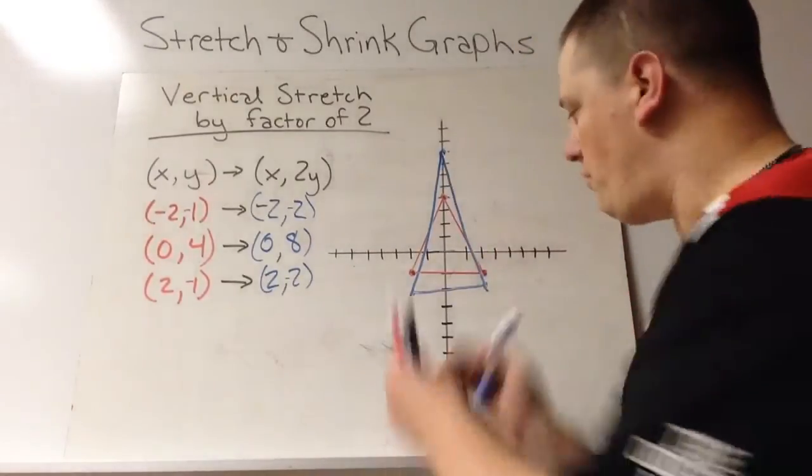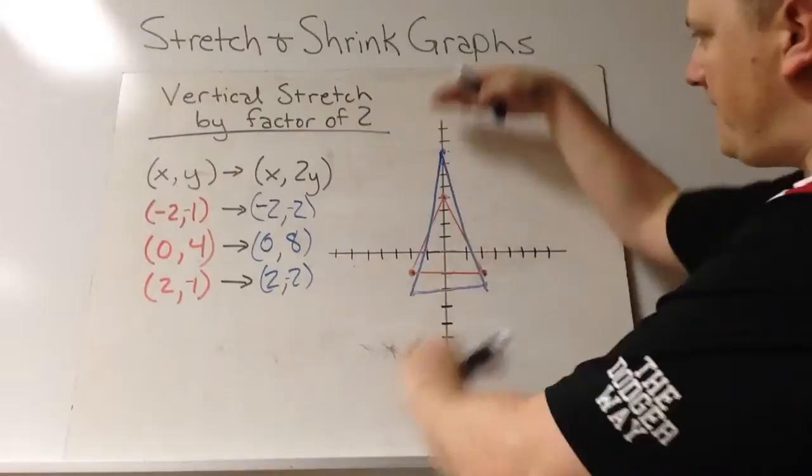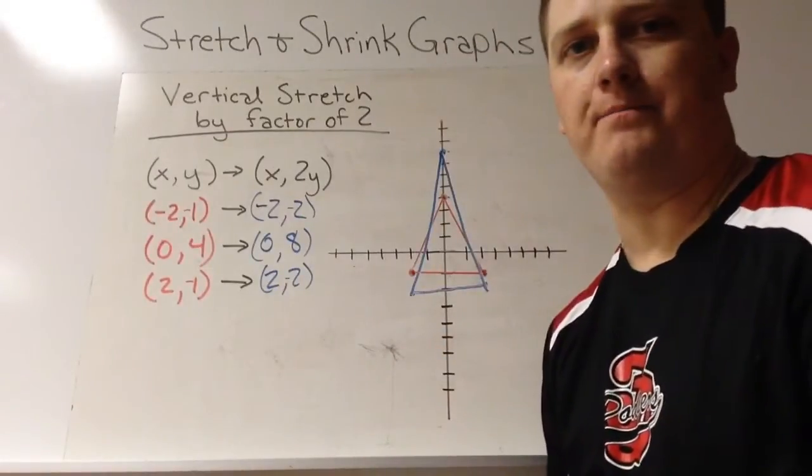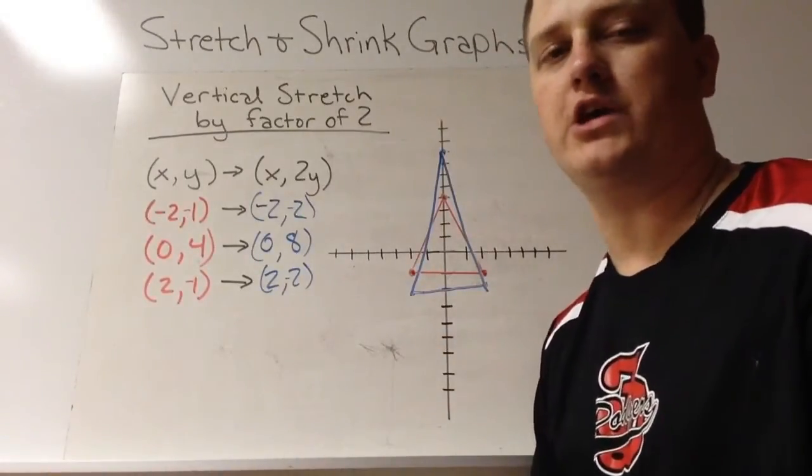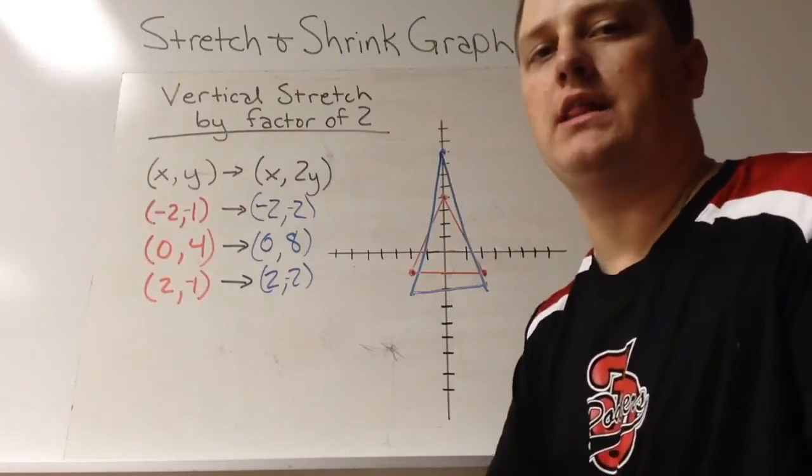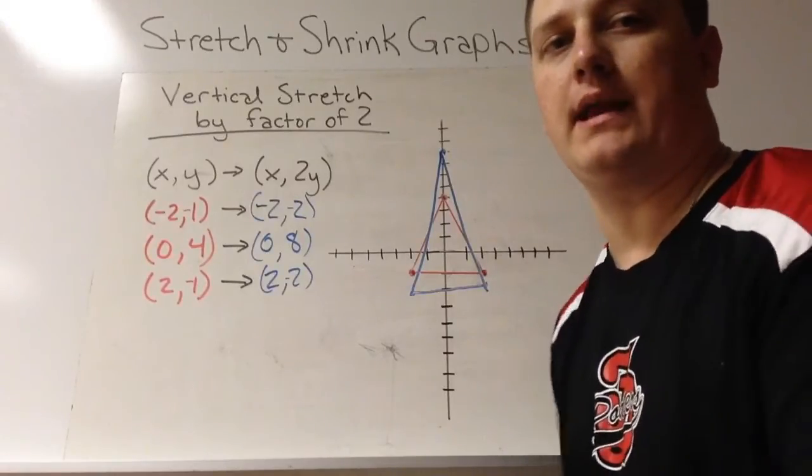Notice the width stays the same, but the height has been made bigger. So it's a much taller triangle now. We're going to look at this for a vertical shrink next.